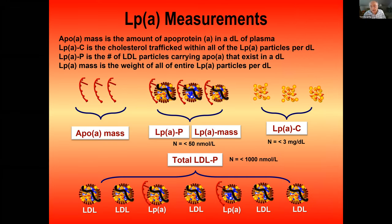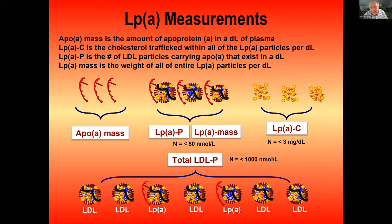Most people get LP(a) mass reported. Very few labs anymore report LP(a) particle concentrations. If you're doing NMR, it does not count LP(a) particles — that methodology doesn't recognize the proteins. And if you are doing NMR LDL particle counts, whatever the result comes back, realize it's just telling you how many LDL particles you have — it does not differentiate regular LDL particles from LP(a) particles.